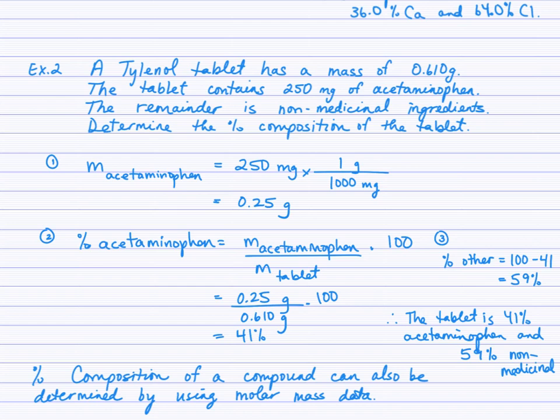We need to start with that 250 milligrams. I'm anticipating doing this percent calculation, but I have to make sure both units are grams. I'll convert 250 milligrams into grams. Now I plug that in as my numerator - mass of acetaminophen over the mass of the tablet - and multiply by 100. Rounding to two sig figs I finish with 41%. The non-medicinal ingredients, 100 minus 41 gives us 59%. So the tablet is 41% acetaminophen and 59% non-medicinal ingredients.